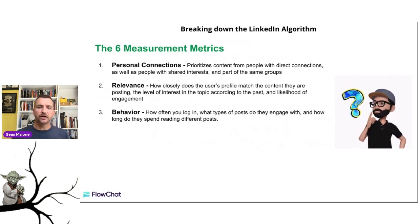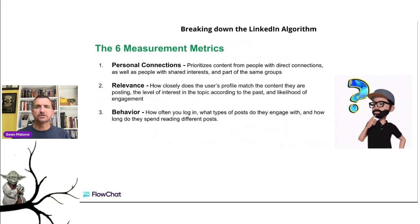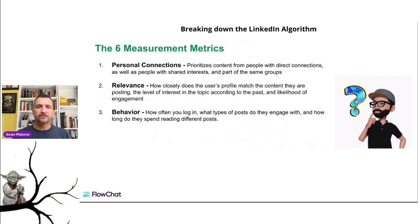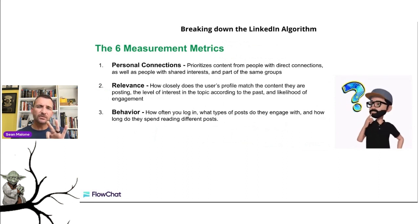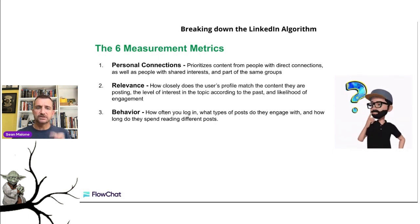Number three is behavior — how often you take action on the platform. LinkedIn is watching this. How often do you log in? What type of posts are you engaging with? How long do you spend reading articles? Do you go to groups? Do you make comments on other people's stuff? When you log into LinkedIn, make sure you're taking human behavior by consuming a little bit of content. I recommend the rule of three: like three people's comments, like three people's posts, make a couple of comments, and you're done. Do that a couple of times a week and the algorithm will recognize you as a real person.